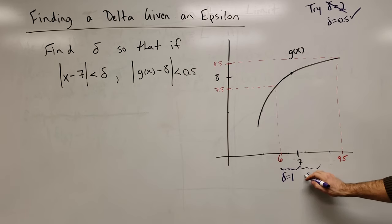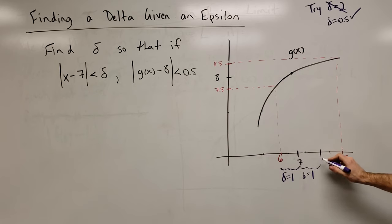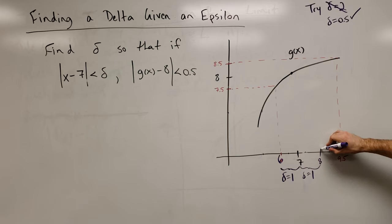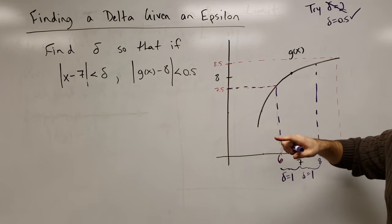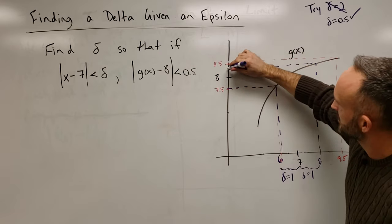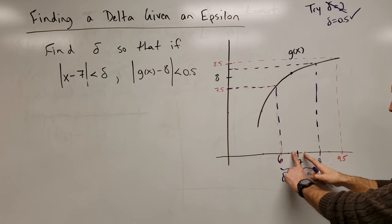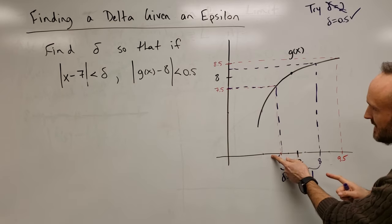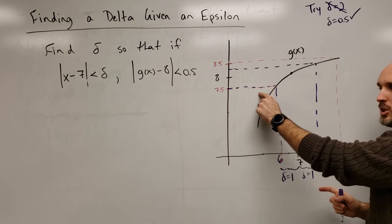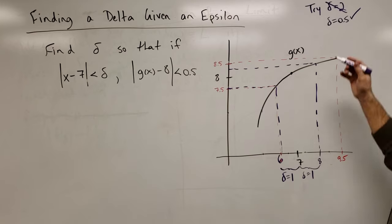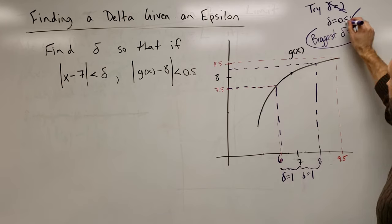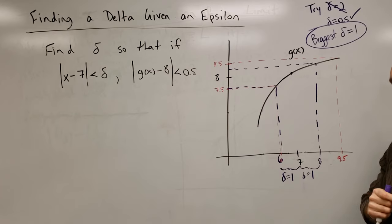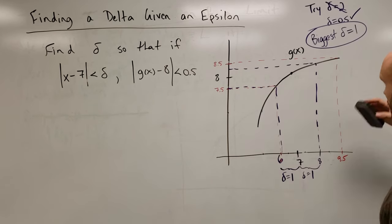If I choose delta to equal 1, then I'm looking at all x values between 6 and 8 and if I trace all of those x values back up here to their y values, 6 traces back to 7.5, that's good, and 8 traces back to something less than 8.5, that's good. And you can see what happens if you expand this delta radius further. You're going to go past 6, which is going to correspond to y values that are below 7.5 in this particular example. So, the biggest delta that you could choose here is 1 in this particular case. Anything smaller than 1 would also work. All right, so that's a great example to sort of get you more comfortable with epsilon delta. Let's try another example.